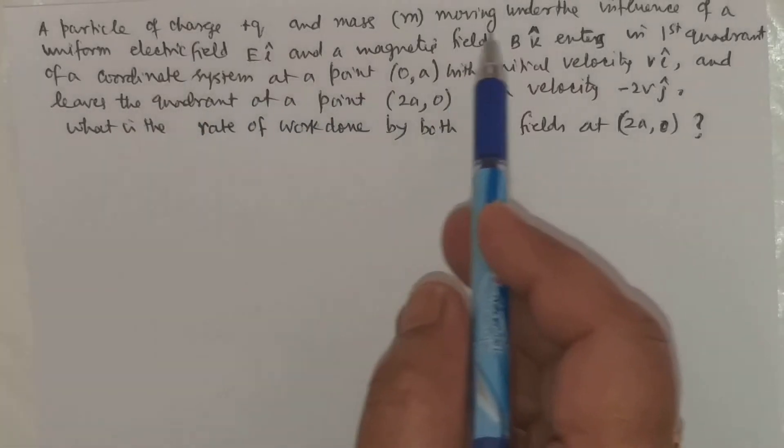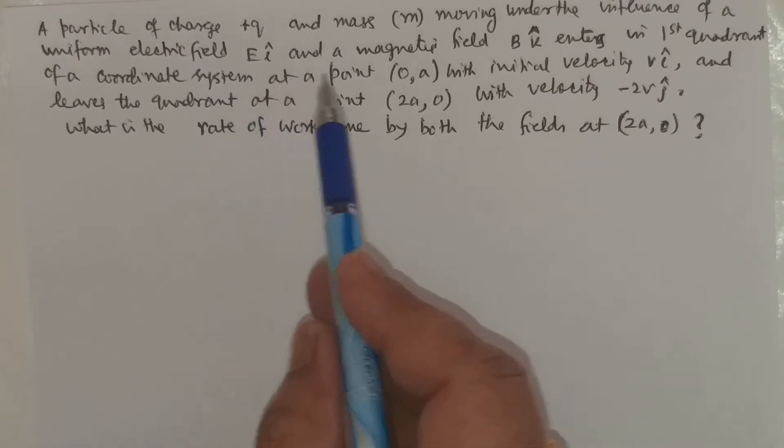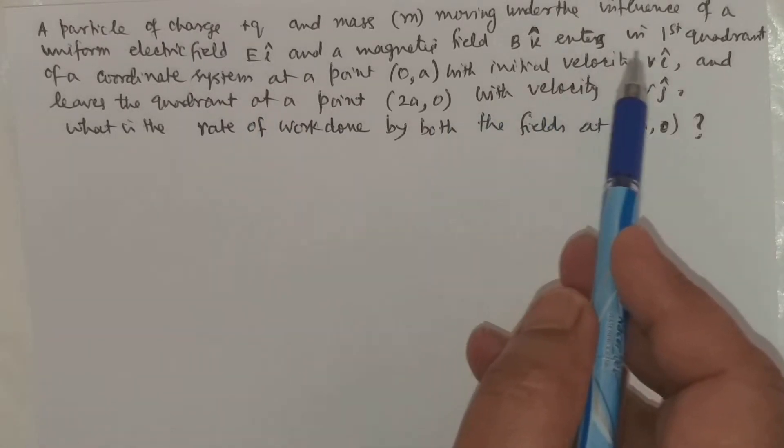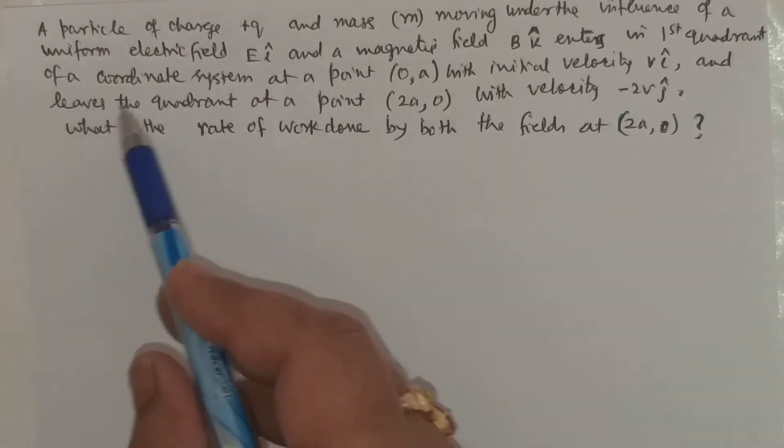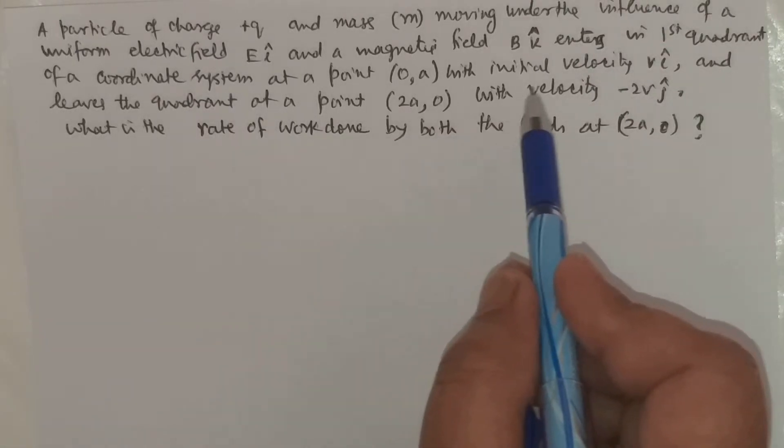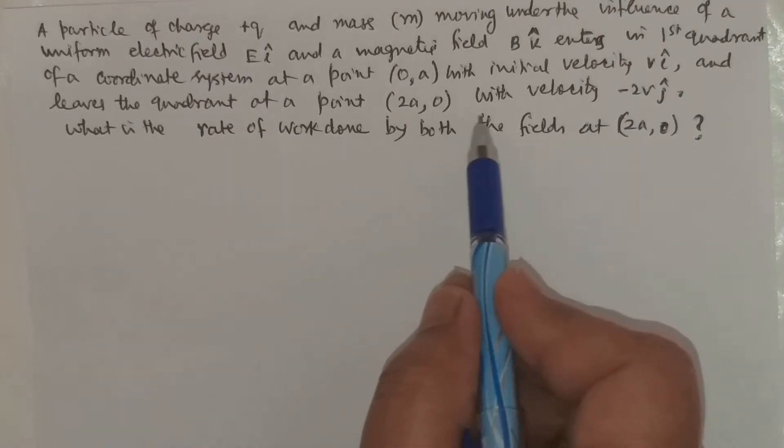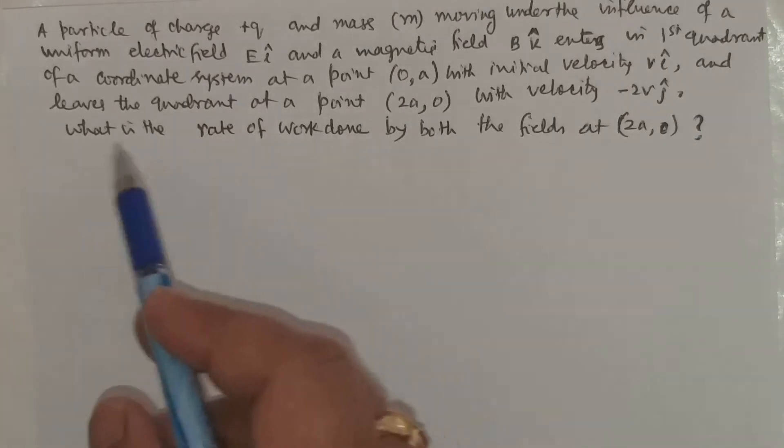A particle of charge Q and mass M moving under the influence of a uniform electric field EI and magnetic field BK enters the first quadrant of a coordinate system at a point (0,A) with initial velocity VI and leaves the quadrant at a point (2A,0) with velocity -2VJ.